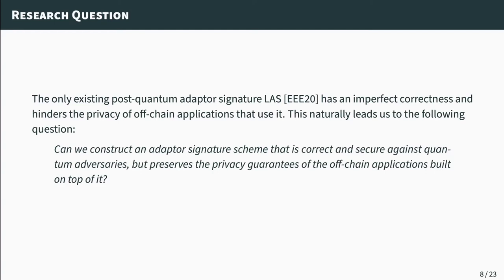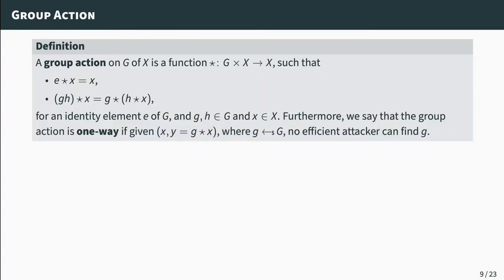As we saw, the lattice-based adapter signature has imperfect correctness and hinders the privacy of some off-chain applications. This naturally brings us to the question: can we construct an adapter signature scheme that is correct and secure against quantum adversaries, but preserves the privacy guarantees of the off-chain applications built on top of it? And the answer is yes — we constructed such an adapter signature from isogeny-based cryptography. But before describing the actual construction, I would like to give some brief mathematical preliminaries.